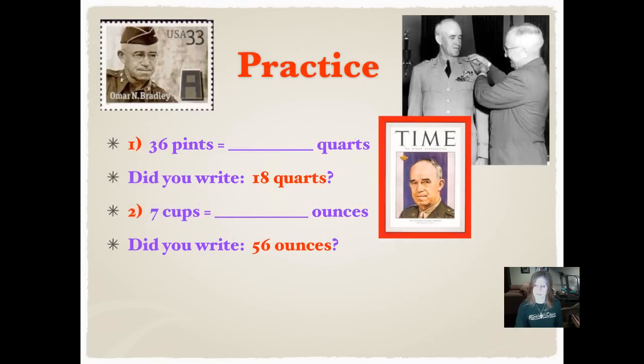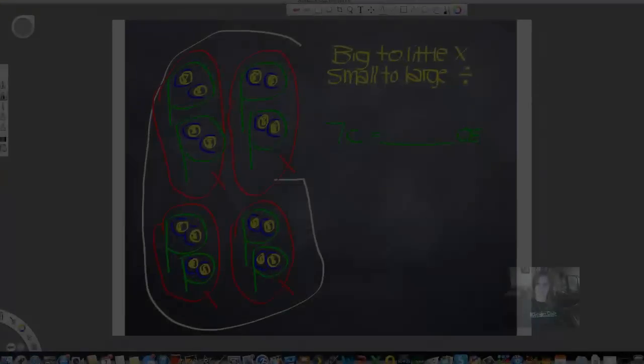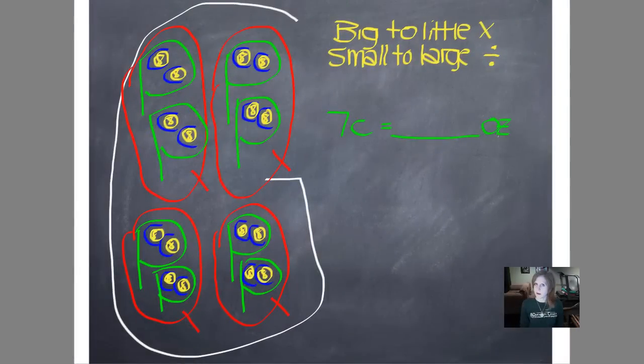Did you write 56 ounces? Let's see how we did that. So we know that we have seven cups, and we want to figure out how many fluid ounces are in that. So we bring our seven straight down, and then we're going from cups to ounces. And cups are bigger than ounces because we have eight ounces in a cup. So we're going from big to little, so we multiply. Big to little multiply. And then we have to know how many ounces are in one cup, and we know that because it's eight. Seven times eight is 56. So seven cups equals 56 ounces, which is abbreviated OZ.